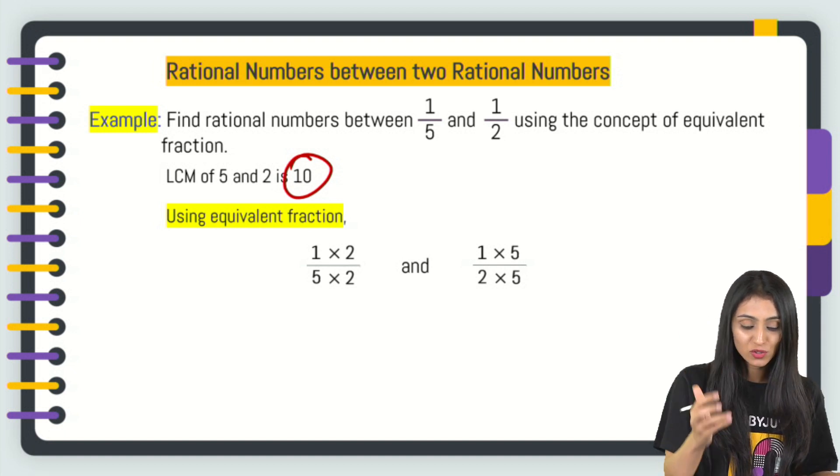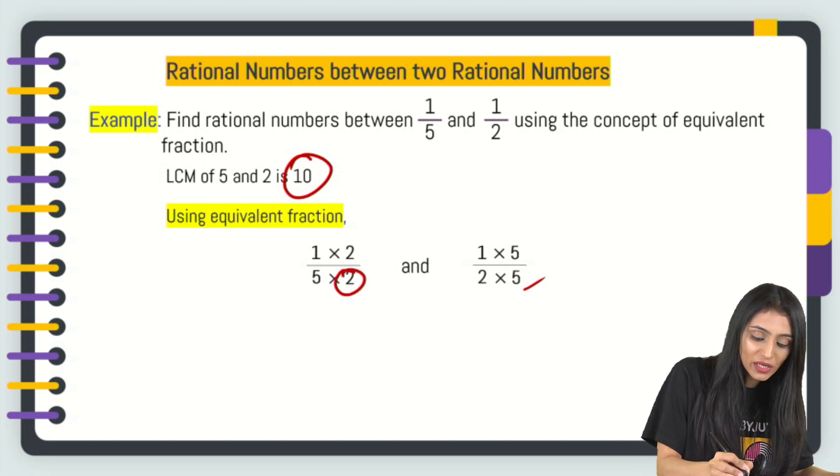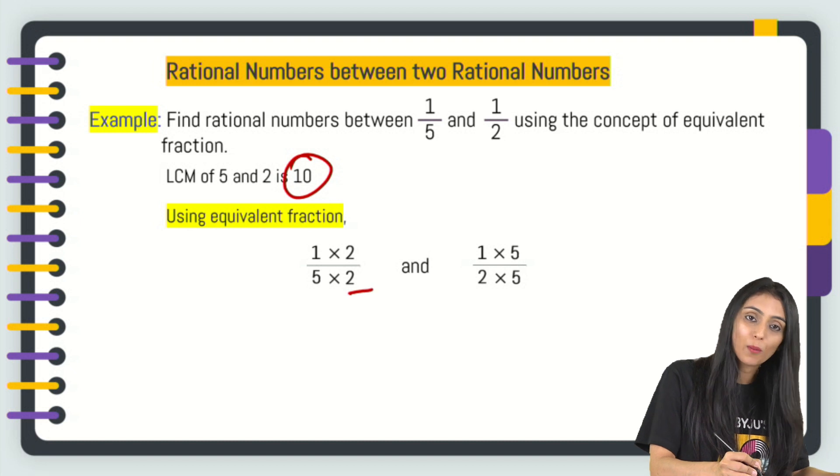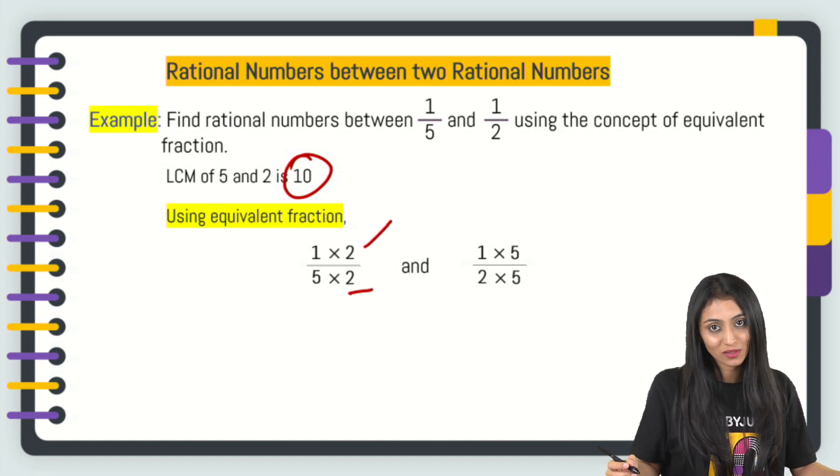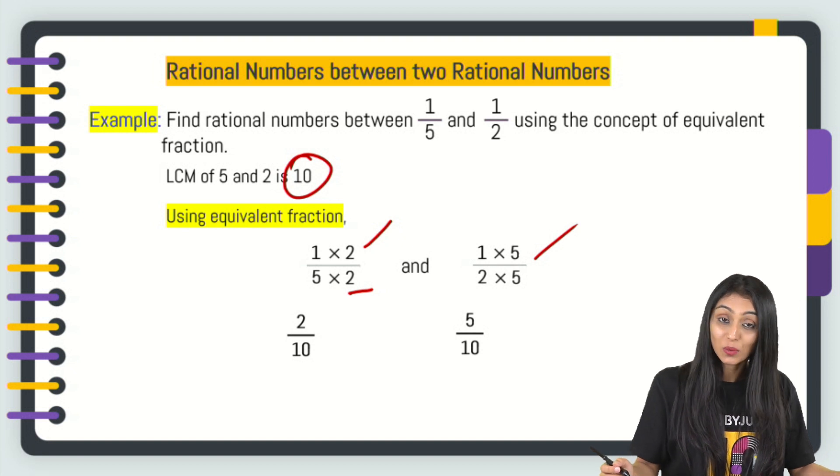Let's make the equivalent fraction here. 1 by 5 times 2 by 2 and here as well 1 by 2 times 5 by 5 because we are making the denominator 10. I'll multiply by 2 here and 5 here. Whatever I'm multiplying in the denominator, I'll multiply with the same number in the numerator as well. That's going to be 2 by 10 and 5 by 10.